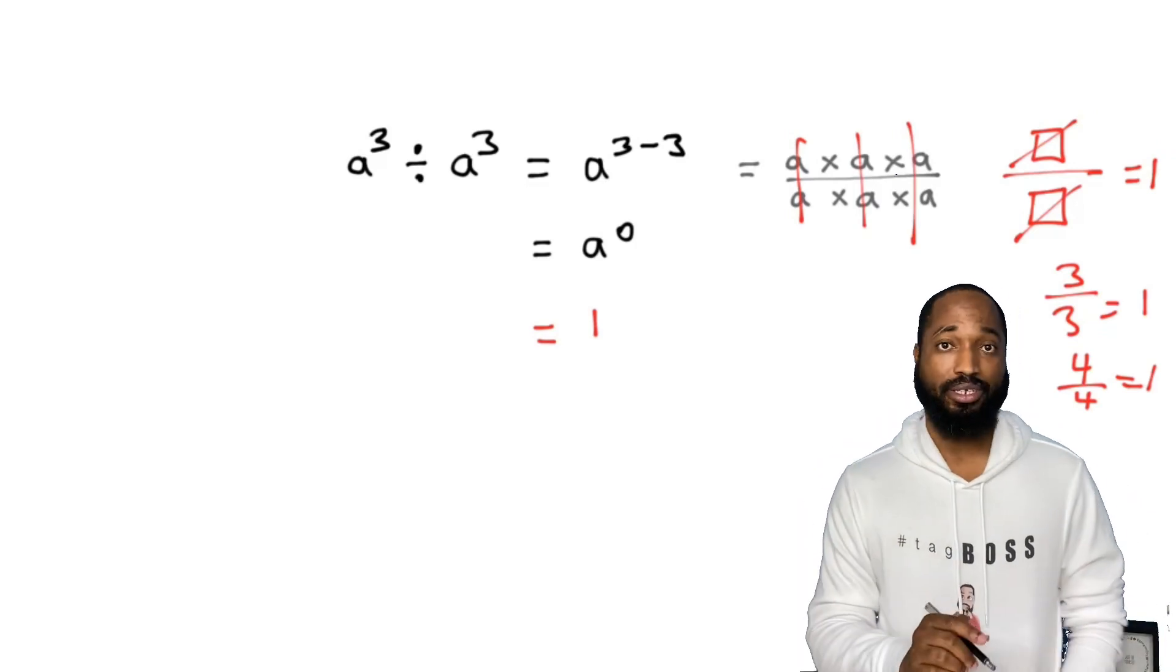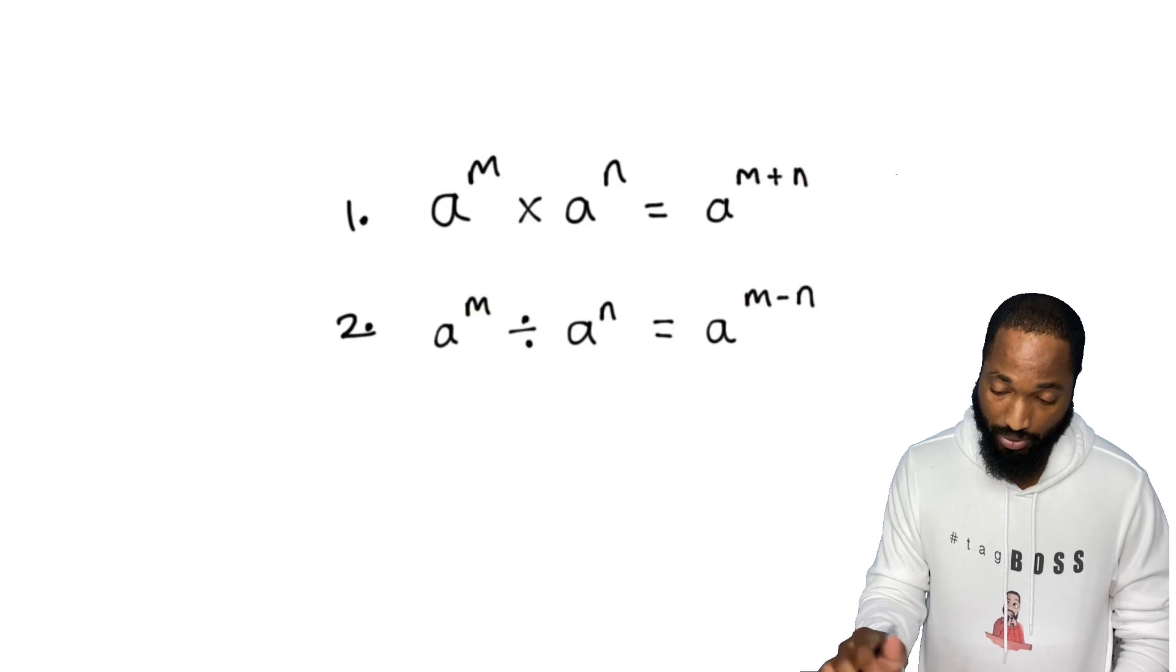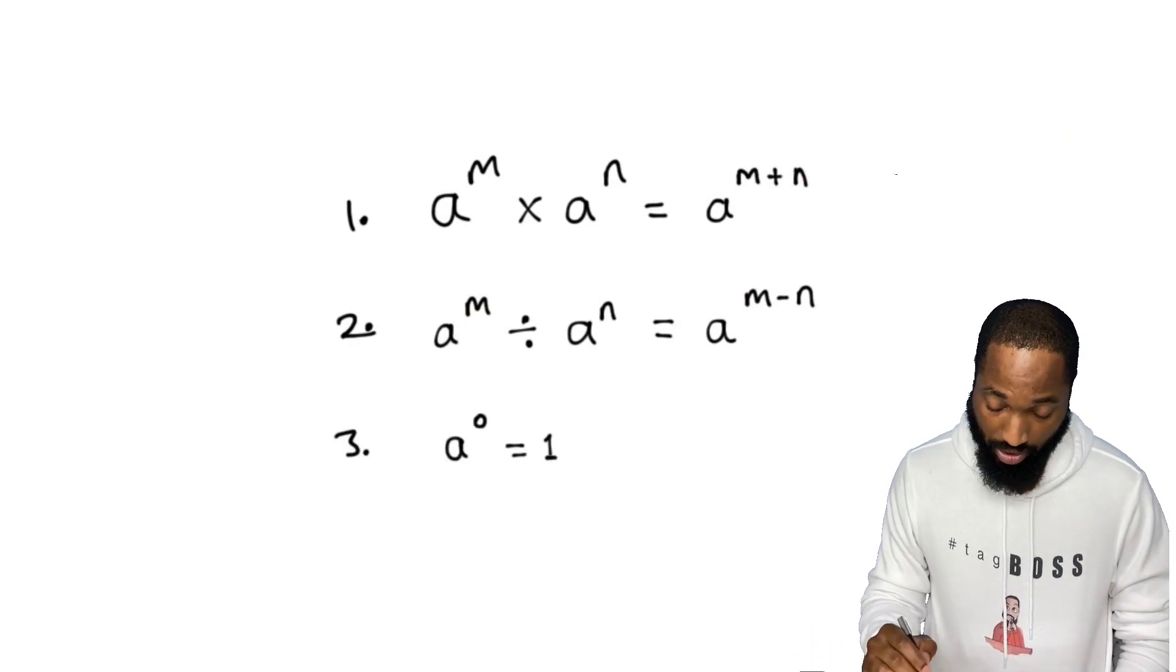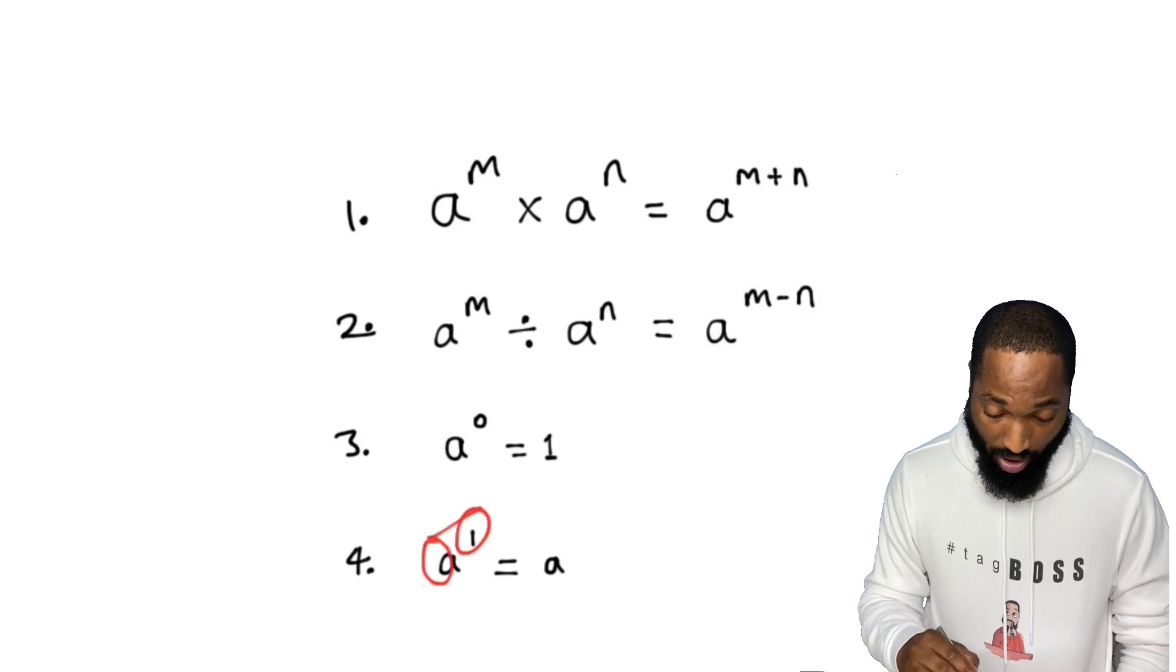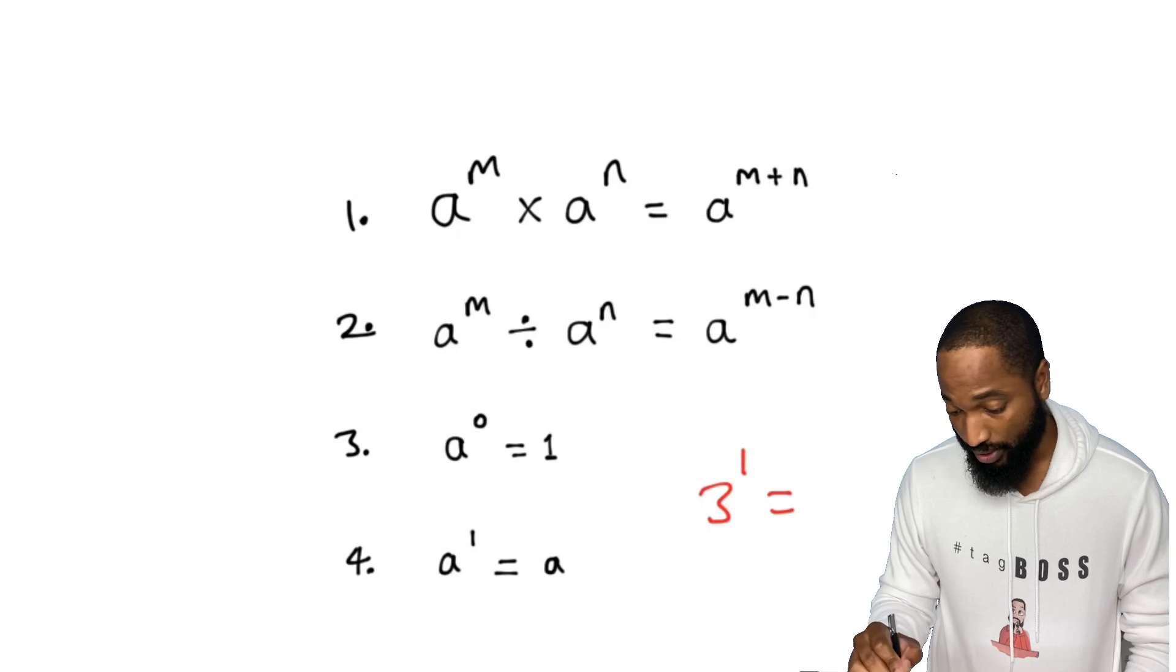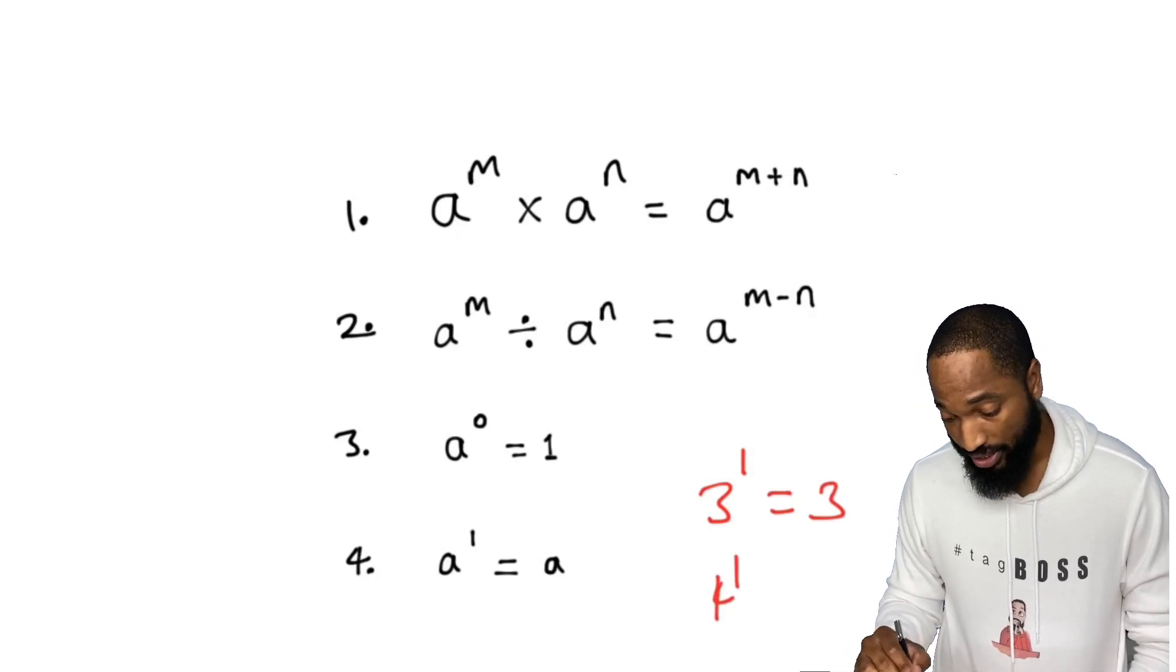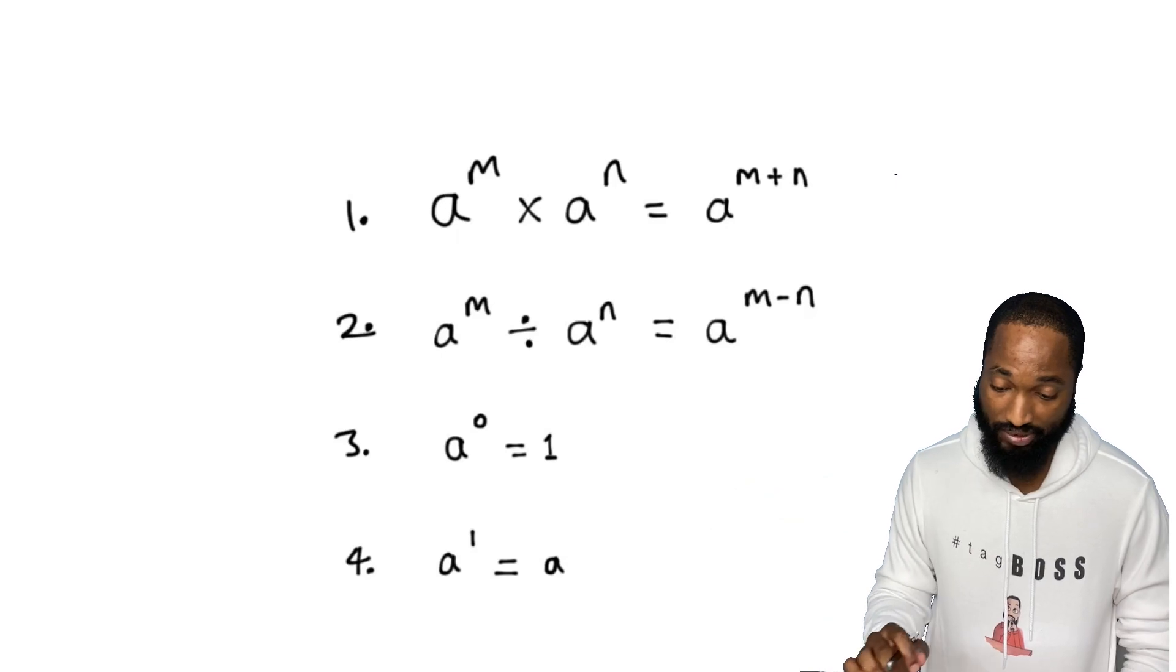Any number to the power of zero is one. Let me add in that rule too: eight to the power of zero is one. And I'm going to check in the next rule: any number to the power of one is itself. For example, three to the power of one is three, four to the power of one is four. We have four beautiful rules.